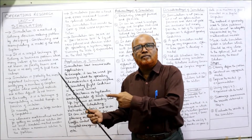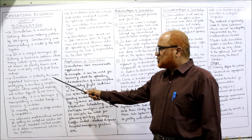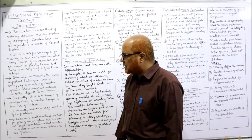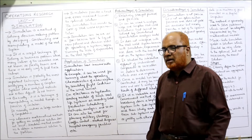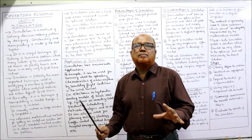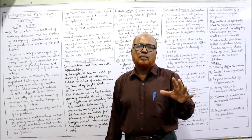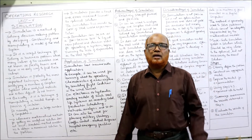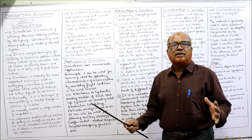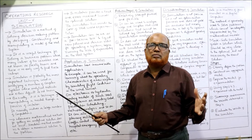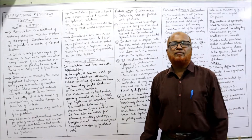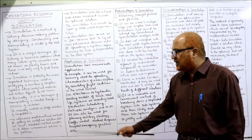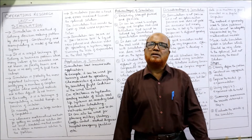Simulation is probably the most important technique used in analyzing complex systems where analytical methods are either difficult or not known. It is normally applied whenever there is no analytical, mathematical, or quantitative method for solving a problem. Mathematical methods apply when we have complete information, but when there is insufficient information, we apply simulation — it is basically a technique of manipulating a model through imitation.